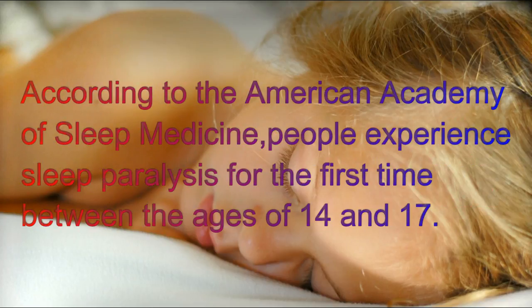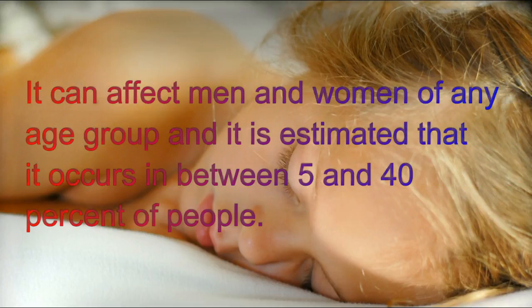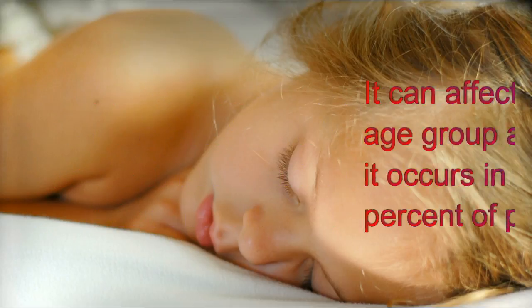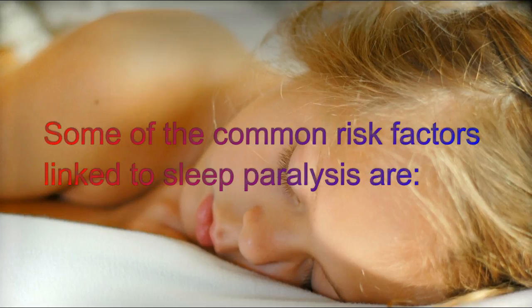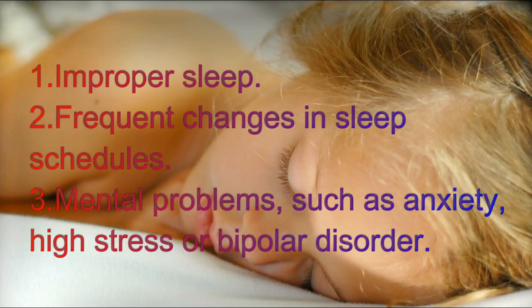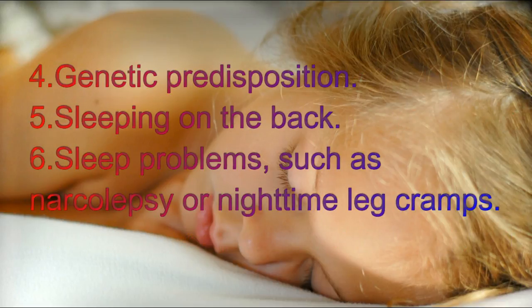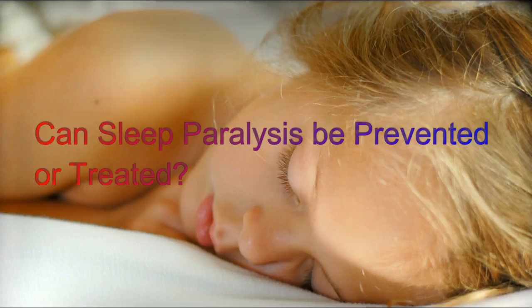According to the American Academy of Sleep Medicine, people experience sleep paralysis for the first time between the ages of 14 and 17. It can affect men and women of any age group, and it is estimated to occur in between 5 and 40 percent of people. A 2015 study published in the Journal of Sleep Research notes that sleep paralysis is moderately heritable. Some common risk factors include improper sleep, frequent changes in sleep schedules, mental problems such as anxiety, high stress, or bipolar disorder, genetic predisposition, sleeping on the back, sleep problems such as narcolepsy or nighttime leg cramps, use of certain medications, and substance abuse.